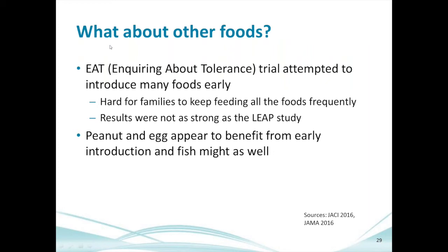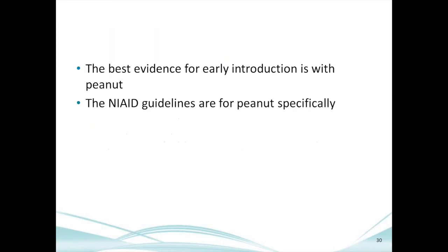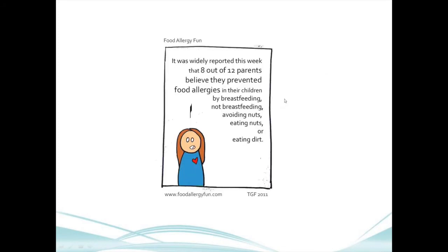The EAT study, published in 2016 by the same LEAP investigators, recruited from the general population and compared introducing six foods — milk, egg, peanut, sesame, fish, and wheat — at three months versus starting at six months. It was very difficult for families to comply with so many foods in large amounts at three months. In an intention-to-treat analysis, no difference was found between three and six months, likely because so many in the three-month group simply couldn't start all those foods. This is why the NIAID guidelines are specifically focused on peanut.